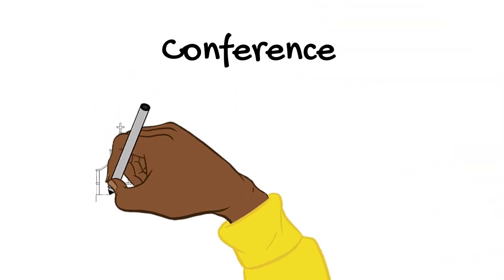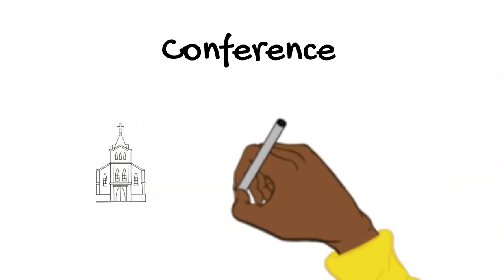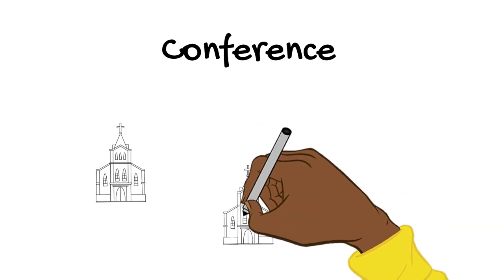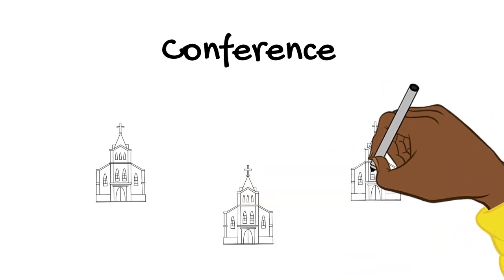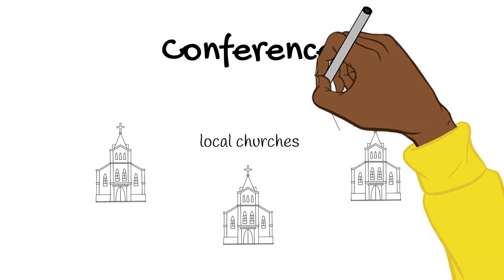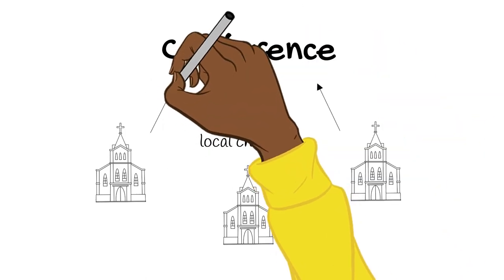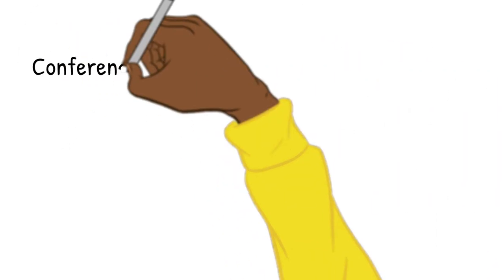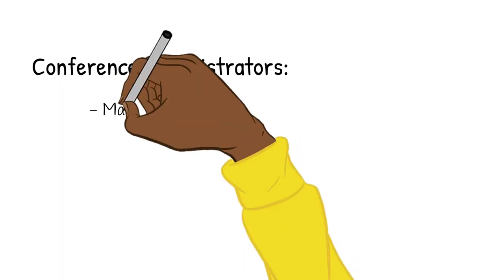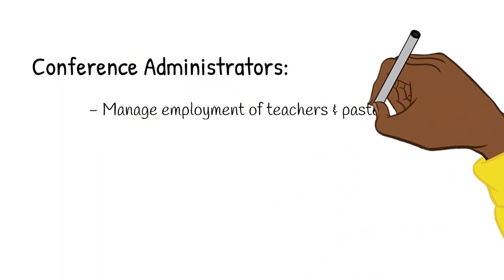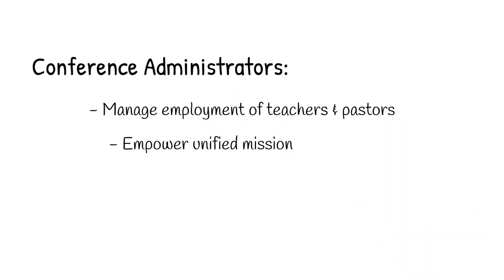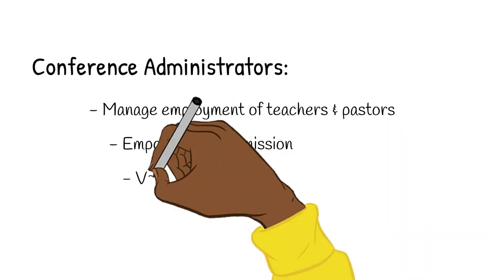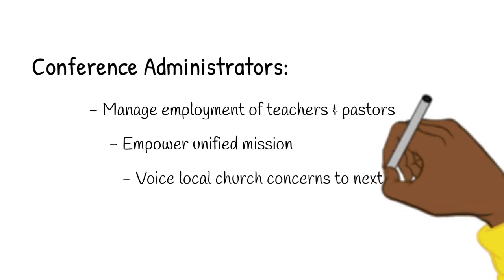The conference level is equivalent to your state government, with each conference managing the local churches in its state, province, or territory. Some conferences, like the Georgia-Cumberland Conference or regional conferences in the U.S., will cover parts of multiple states. Conference administrators are elected at a conference's constituency session to manage the employment of its teachers and pastors, empower unified mission across the conference, and voice the concerns of the local church to the next tier up, the unions.